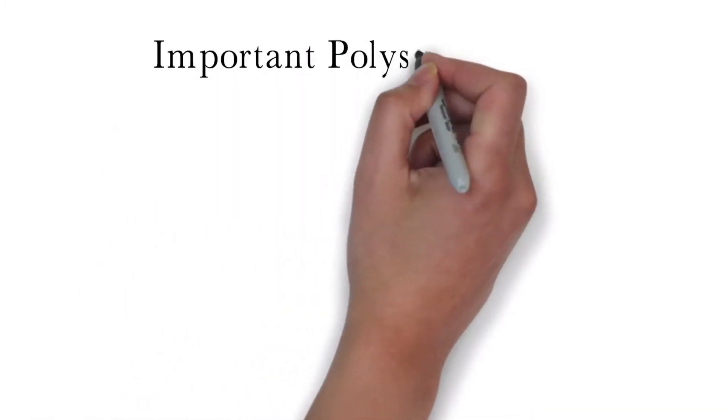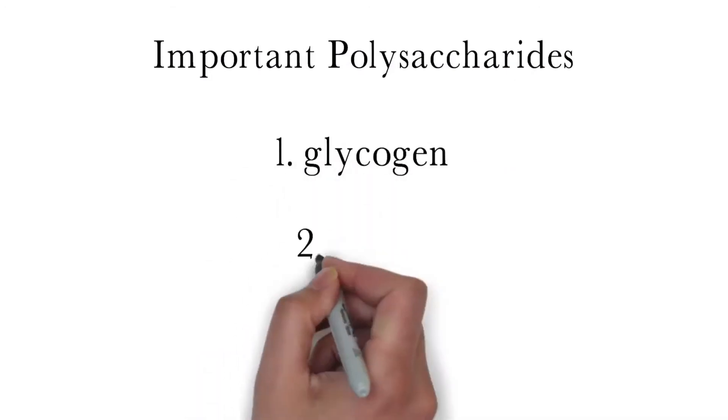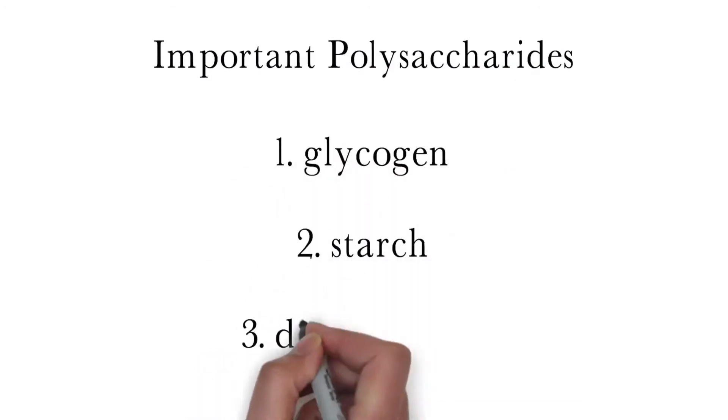In the field of nutrition, there are three important polysaccharides. They are glycogen, starch, and fiber. Each one will be discussed next.